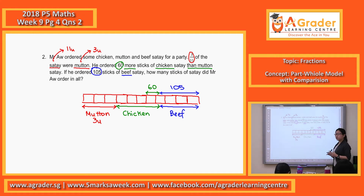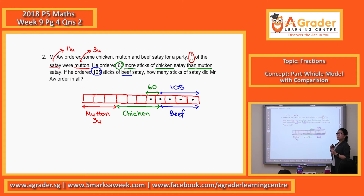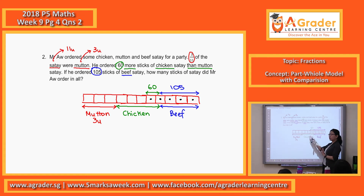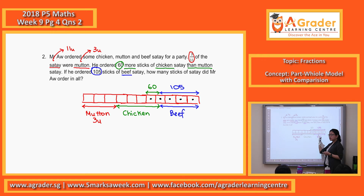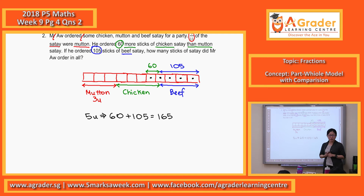So where do you think we should focus for this model? For 5 units, the 60, and 105. Basically what we are looking at: because there's 60 more chicken than mutton, we cannot compare with the 3 units for mutton. We take the rest — our focus point is here. The 5 units. So 5 units equals 60 plus 105, which gives you 165. You can see it's very different from the example. Sometimes when you draw a model, it doesn't mean you must always have the number and the respective units only.